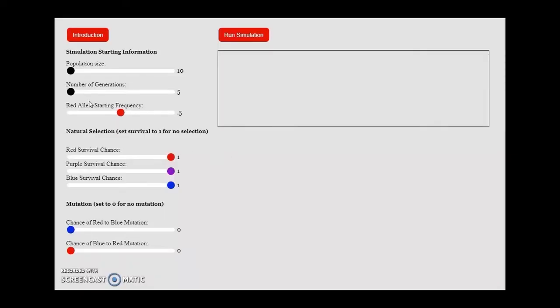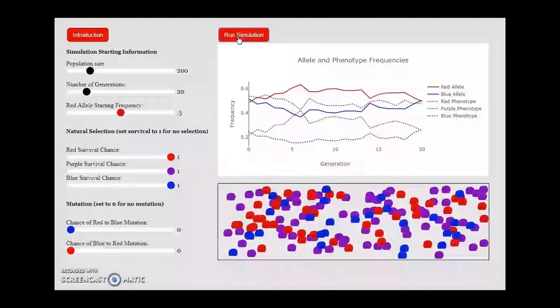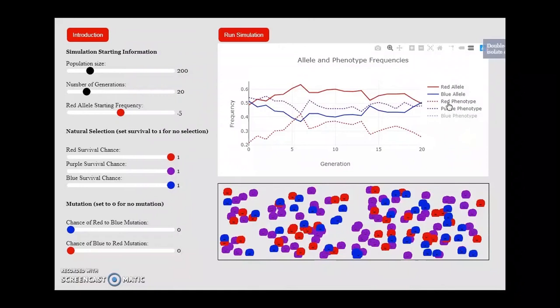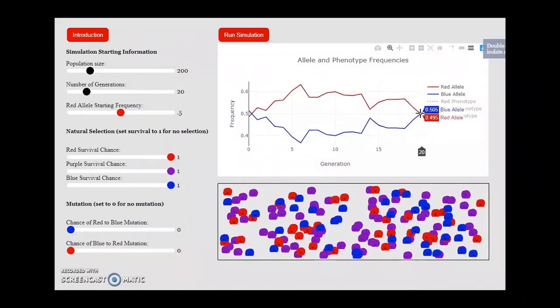Let's look at a second example. In this case, we're going to set the population size to 200, but the other parameters will be the same as before. For this run, the final allele population is 0.495 for the red and 0.505 for the blue. This time, we have a total of 400 alleles in the population.